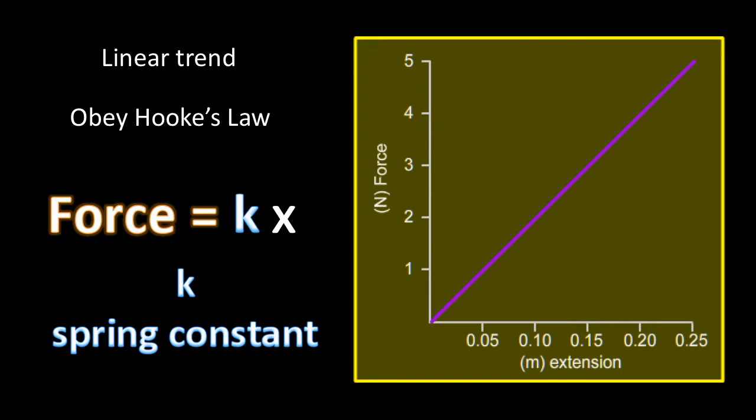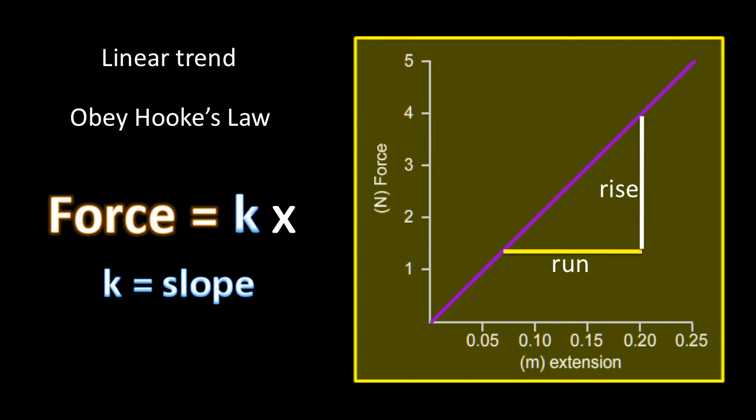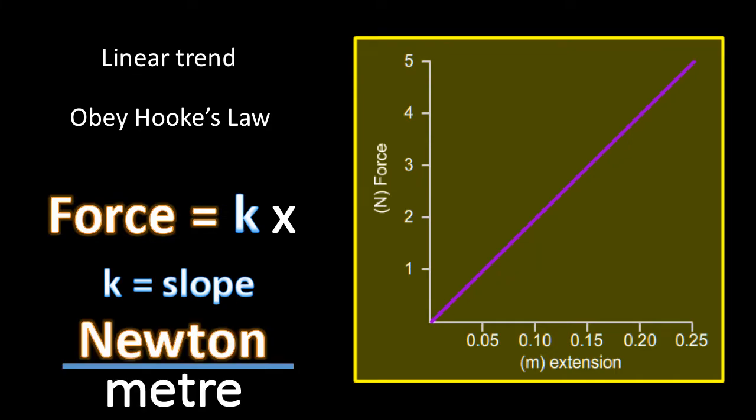k is called the spring constant. To determine the spring constant, we need to calculate the slope of this line. In other words, we need to calculate the rise and the run. The unit of the rise is the newton, the unit of the run is meter, and so the unit for the slope of this line, which is the spring constant, is newton per meter.